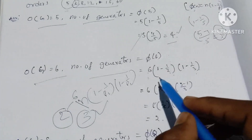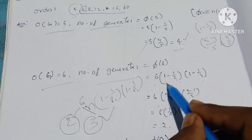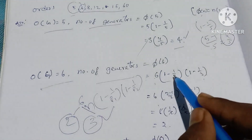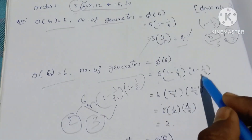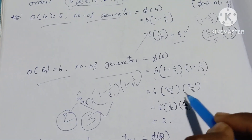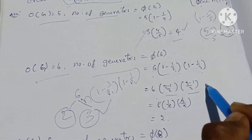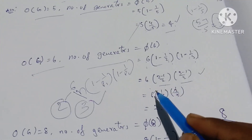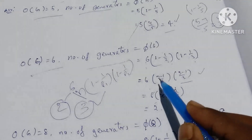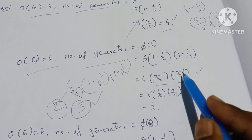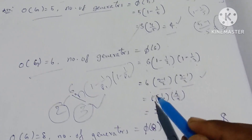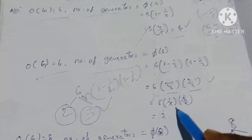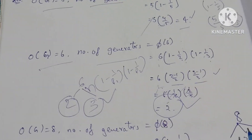So φ(6) = 6 into 1 minus 1 by 2 into 1 minus 1 by 3. The correct answer, multiplying these out, equals 2.